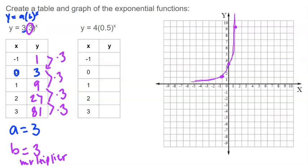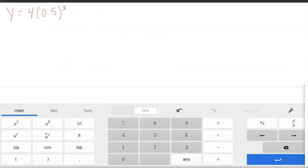Alright, so that is one way to create the table. The other way would be to use the equation and type it into a calculator. So I'm going to show you that. I'm using the Desmos calculator that is linked in your Schoology page if you'd like to use that.